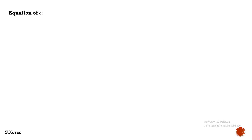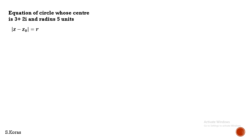Let us consider an equation of a circle whose center is 3 plus 2i and radius is 5 units. The equation of a circle is modulus of Z minus Z₀ equals R. Here Z is the variable, Z₀ is the center, and the radius is 5. Applying these values gives us the general equation of the given circle. Now let us consider a point 2 minus i and check whether this point is inside the circle or not.